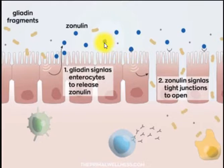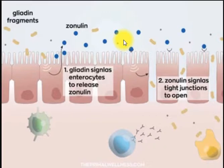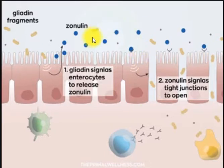The problem is when zonulin starts to disrupt these tight junction binding proteins. This gap opens up and you can no longer selectively choose what goes in and out of the small intestines. So you get everything — larger undigested food particles, bacteria, viruses — things start to pass through that weren't normally there. The higher the level of zonulin, the worse the gap gets and the more passes through.